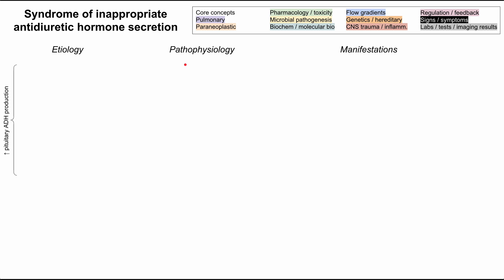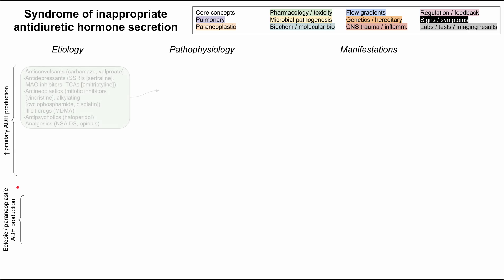We'll start with the etiology. The etiology of SIADH falls into two big buckets. The extra ADH, the extra anti-diuretic hormone, can be produced in the pituitary gland where it's normally produced, or it can be produced from ectopic or paraneoplastic sources.